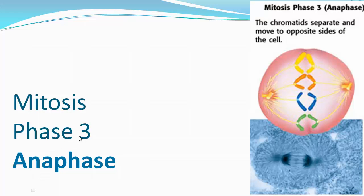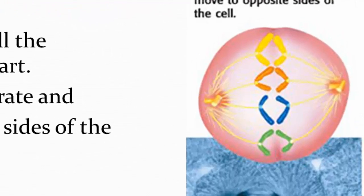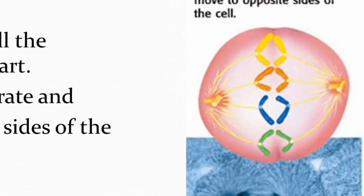The third phase of mitosis is anaphase. During anaphase, the spindle fibers start to retract and pull the chromosomes apart. One chromatid goes one way and the other chromatid goes the other way, and eventually they end up on opposite sides of the cell.